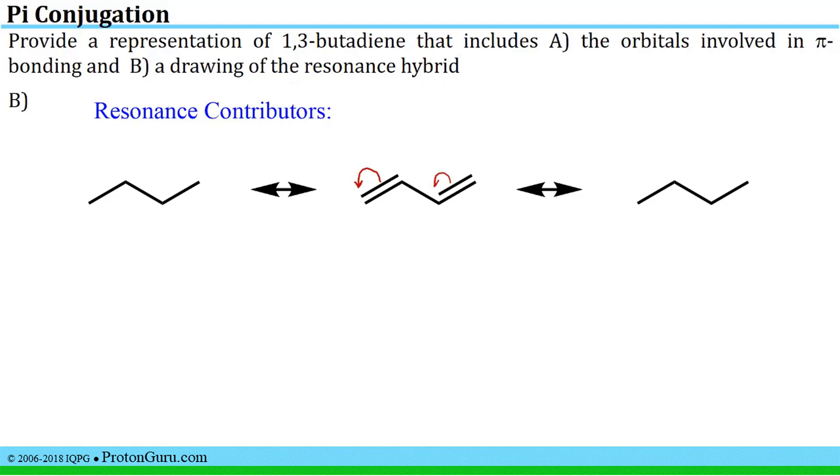There are a couple of resonance contributors we can draw. We can move the pi bonds in this way and that would move a negative charge to this carbon here. You'd be left with a positive charge on this carbon here, and you'd have a new pi bond between these two carbons. It can be helpful to confirm the validity of this as a resonance contributor by filling in the hydrogens and lone pairs. When we move a pi bond pair of electrons onto this carbon, that pair of electrons is now sitting on that carbon. When you're drawing resonance contributors you can't move any sigma bonds, so the number of hydrogens on each of the carbons in the structure must remain constant.